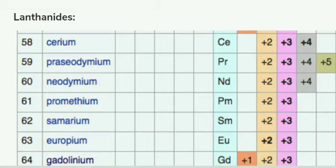Let's start from cerium with atomic number 58. When we consider the case of cerium, praseodymium, neodymium, promethium, samarium, europium, and gadolinium, you can see that the common oxidation states exhibited by these elements are plus 2 and plus 3.